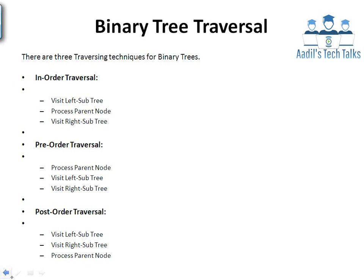Binary tree traversal means to visit each and every node of a binary tree. There are three different techniques. The first is in-order traversal: visit left subtree, then process parent node, then visit right subtree. The second is pre-order traversal: process parent node, then visit left subtree, then visit right subtree. The third is post-order traversal: visit left subtree, then visit right subtree, then process parent node. Pre means parent comes before its children; post means parent comes after.